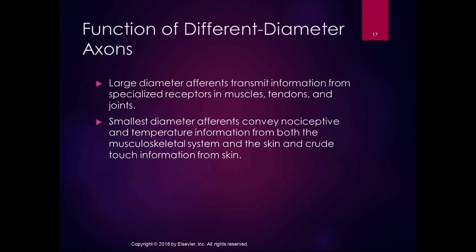The smallest diameter afferents convey nociceptive and temperature information from both the musculoskeletal system and the skin, as well as crude touch information from the skin. The larger diameter axons — the faster ones — are largely involved with our non-conscious responses to position sense, correcting posture and muscle tone. The smaller ones carry more of our conscious touch, temperature, and nociception, transmitting information more slowly.